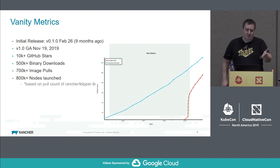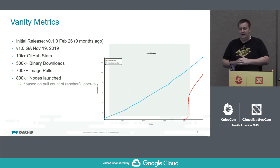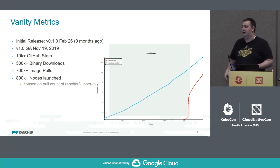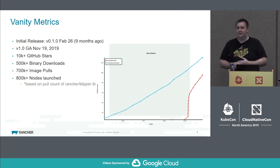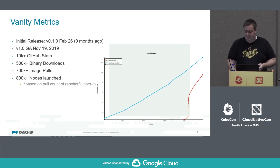Some other stats: K3S has been downloaded about 500,000 times, with around 700,000 image pulls. We're really bad at tracking metrics of live clusters, but we estimate around 800,000 nodes have been launched, inferring from image pulls. It just seems to be taking off, which is really cool.